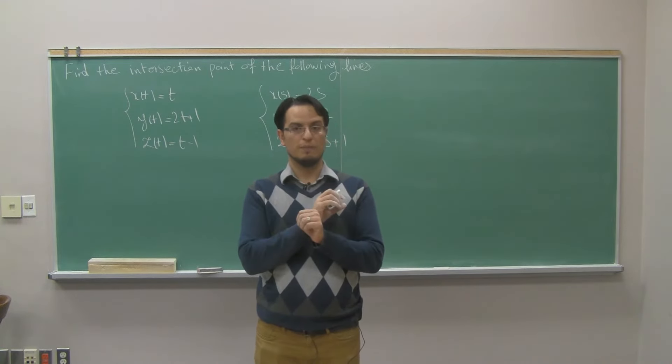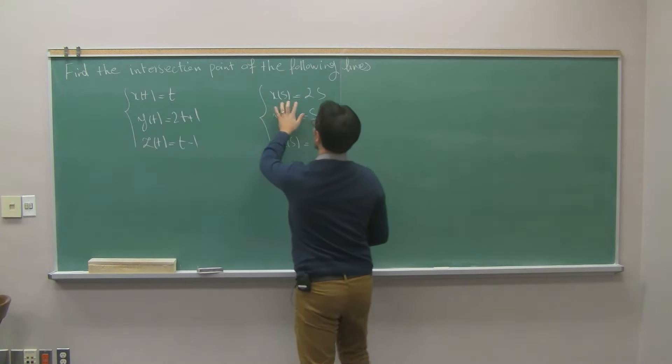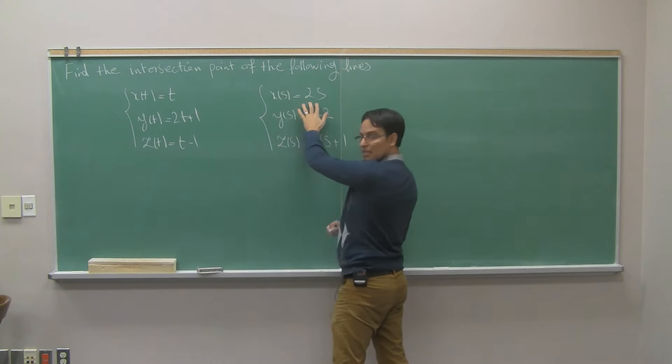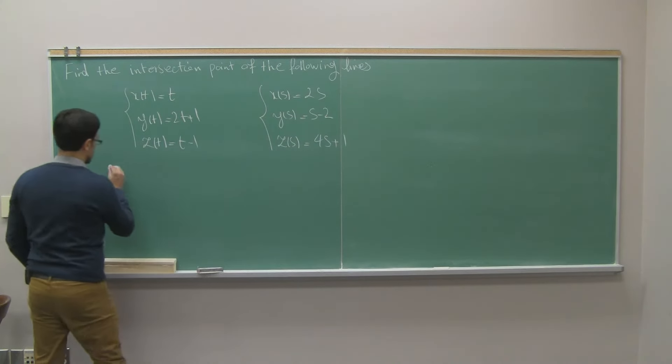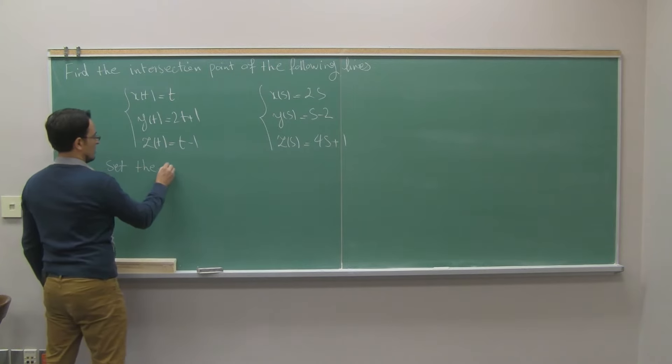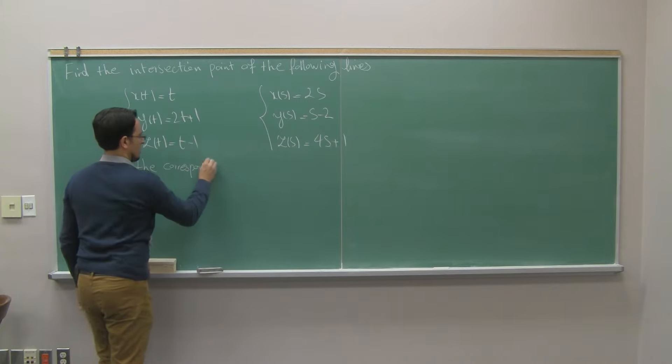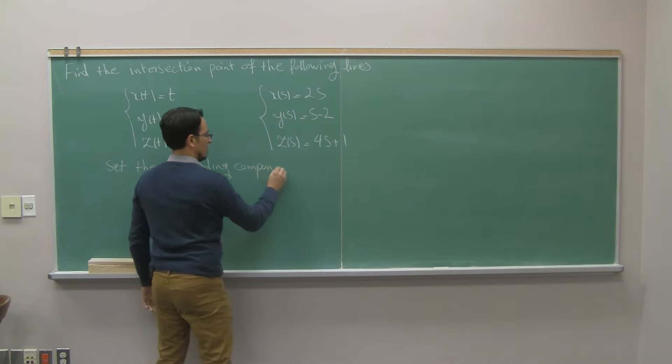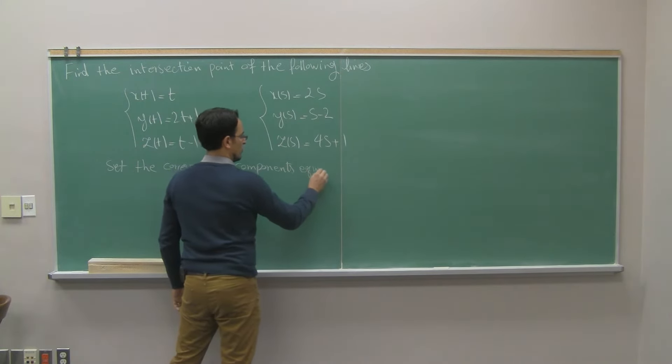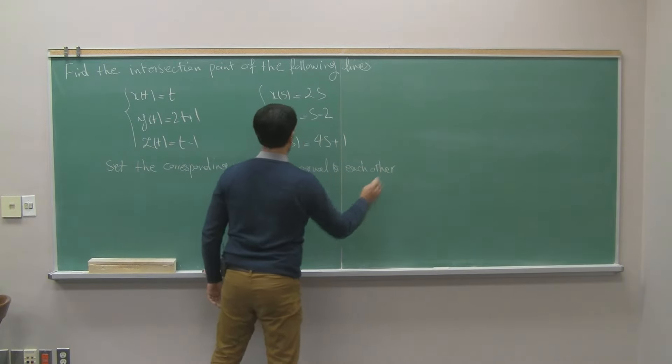Meaning that, I have x in the first line in terms of t. I have x in terms of another parameter, s, in the second line. Put them equal to each other. Set the corresponding coordinates, components, equal to each other.